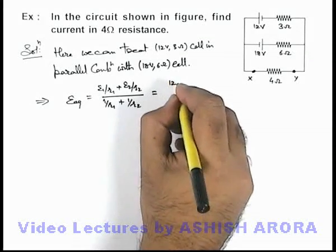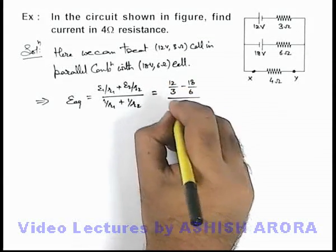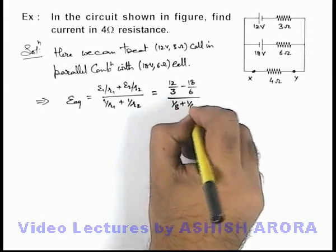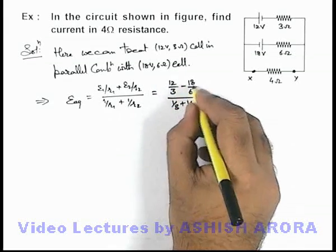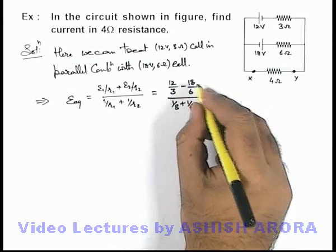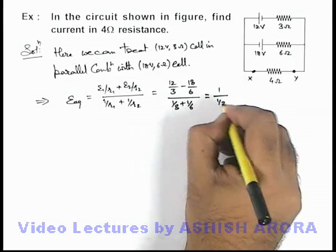So here we can write it as 12 by 3 minus 18 by 6, divided by 1 by 3 plus 1 by 6. On further simplifying, you can see this will be 4 minus 3, so this will be 1 divided by 1 by 2, which equals 2 volts.